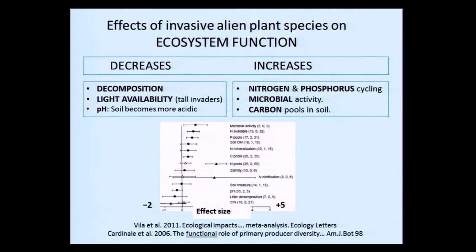Ecosystem functions are also affected. With more invasive non-native plants, you have decreases in decomposition, light availability, and soil acidity as previously mentioned. You may get increases in nitrogen and phosphorus cycling, microbial activity, and carbon pools in the soil.